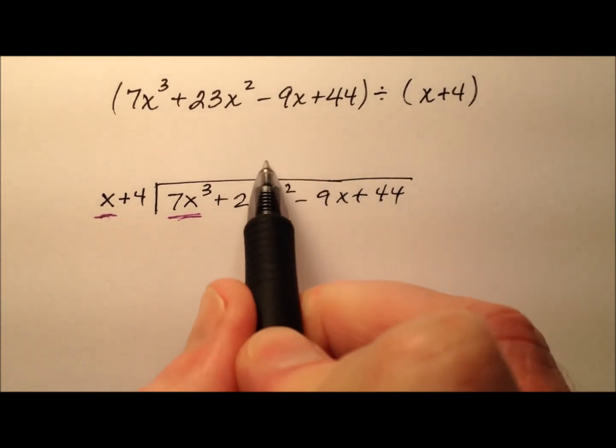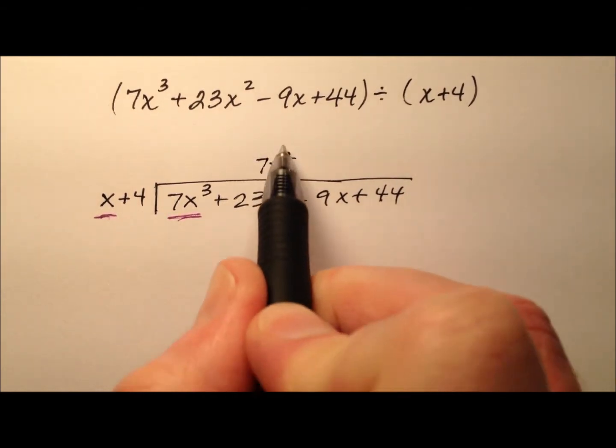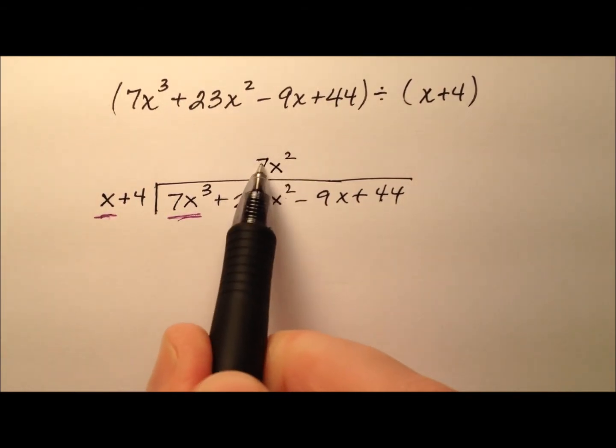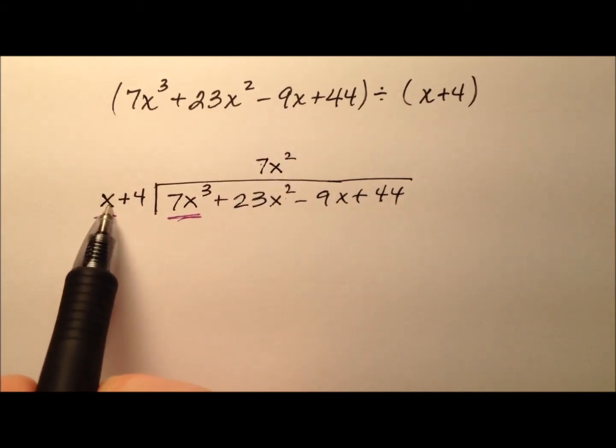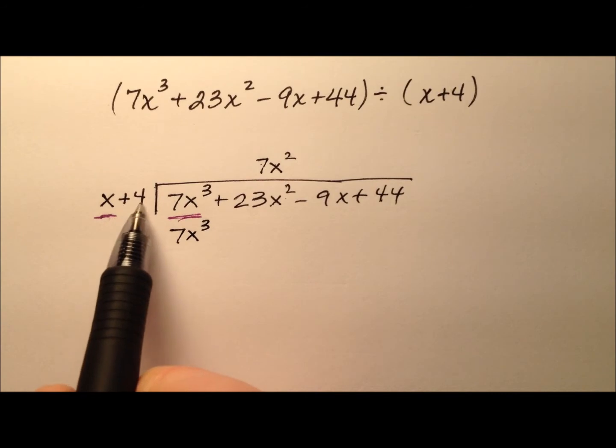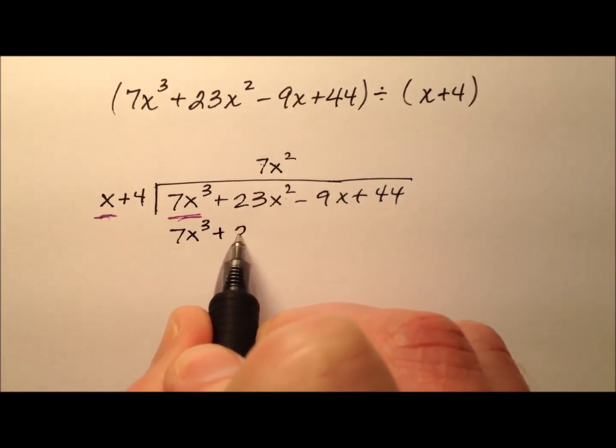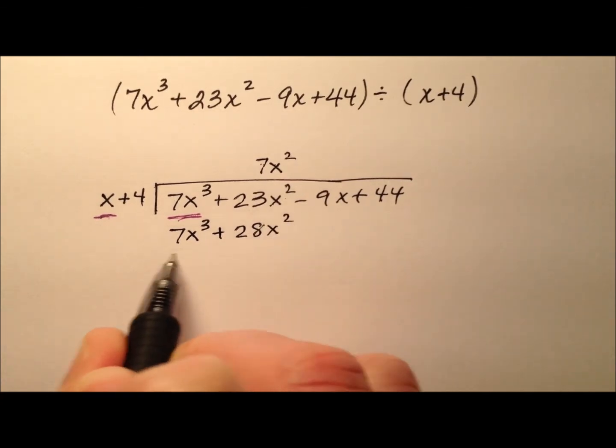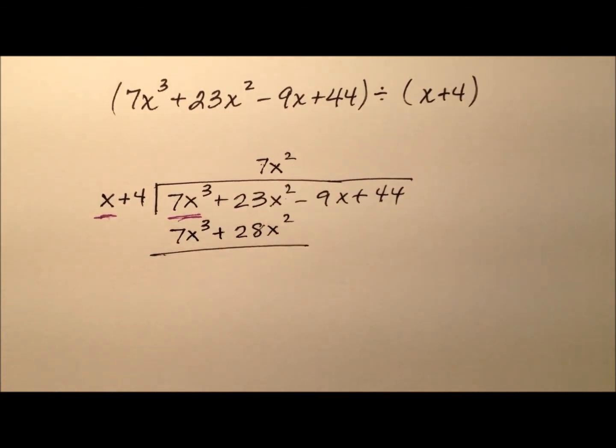So I'm going to line up those x squared terms together. So 7x squared times x makes 7x cubed, and then I also need to multiply it by the constant here. So 7x squared times positive 4 is plus 28x squared. And notice that all these like terms are aligned.